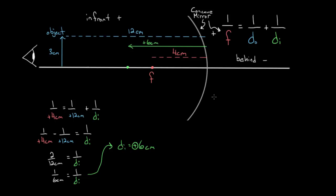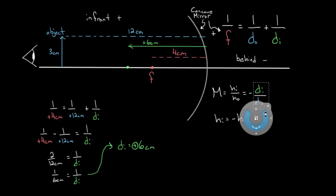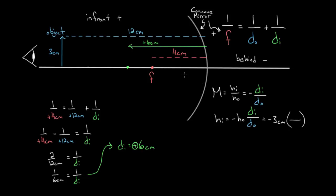That equation is called the magnification equation. It says the magnification equals the height of the image divided by the height of the object, and that equals negative the image distance divided by the object distance. Solving for the height of the image: it's negative the height of the object times the ratio of image distance over object distance. The object is three centimeters tall, so: negative three centimeters times six over 12. That gives one-half of negative three, which is negative 1.5 centimeters.